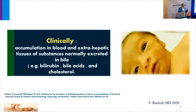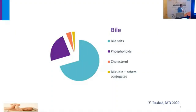If bilirubin accumulates, it will lead to jaundice. The main components of bile are bile salt, phospholipid, cholesterol, and bilirubin with other conjugates.